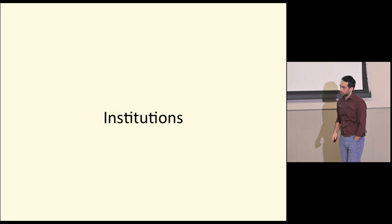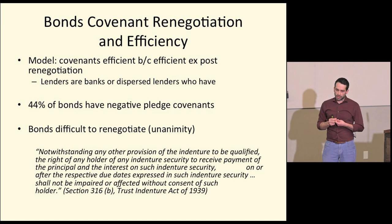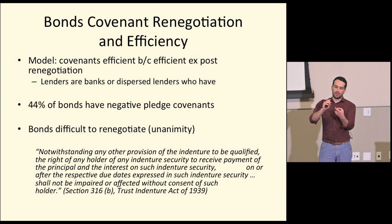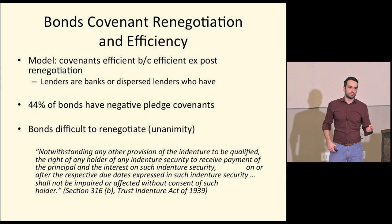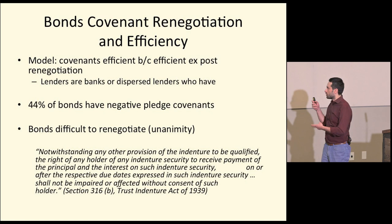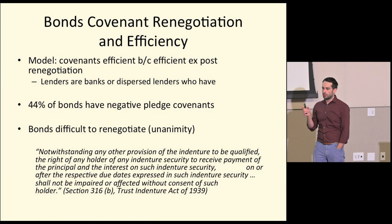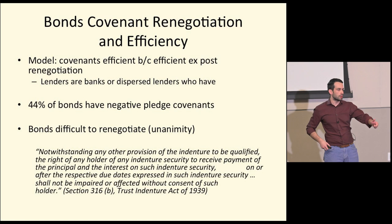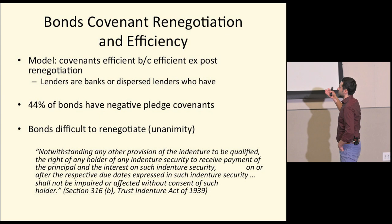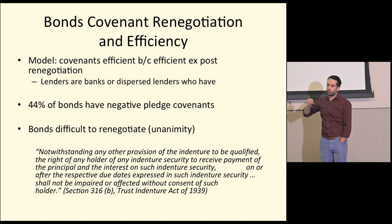There are broadly three things required for negative pledge covenants to be efficient and therefore to exist: (1) efficient renegotiation, (2) the presence of other unsecured debt, and (3) a specific project structure. On efficient renegotiation — the empirical literature is all over the place, partly because you only learn whether someone is studying bond or bank covenants if you read the data section. Negative pledge covenants are really in bonds — 44% of bonds have them — not really in bank debt.